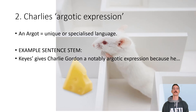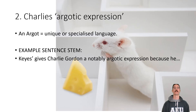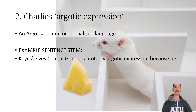Next is Charlie's argotic expression. 'Argotic' just means unique to a field — the most common example is thieves' argot, meaning that thieves speak in a particular way. Your sentence starter is: 'Keyes gives Charlie Gordon a notably argotic expression because he...' — and then we're looking for an authorial intent continuation.